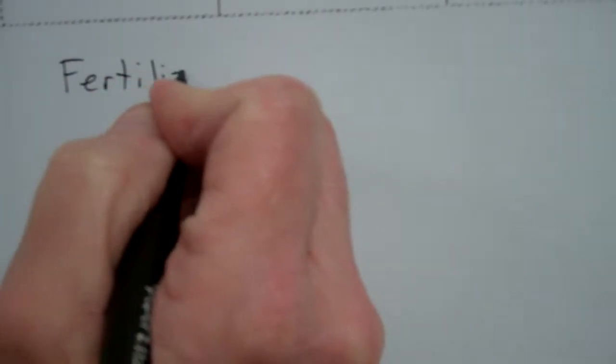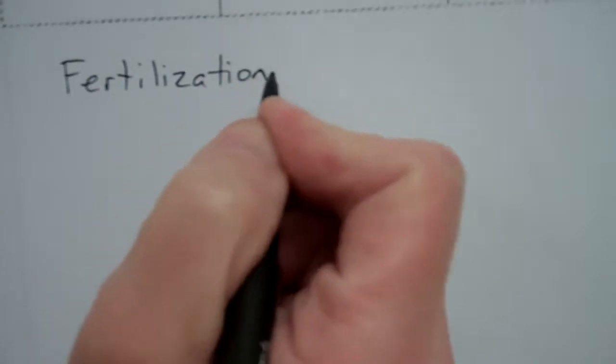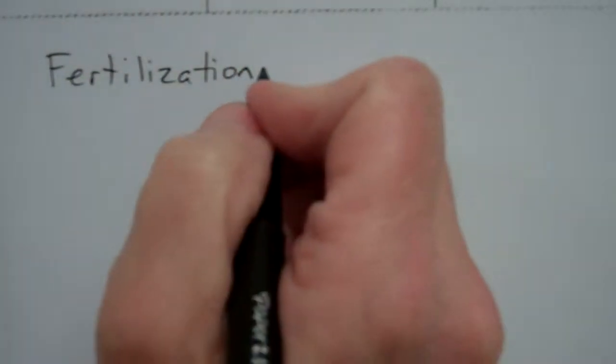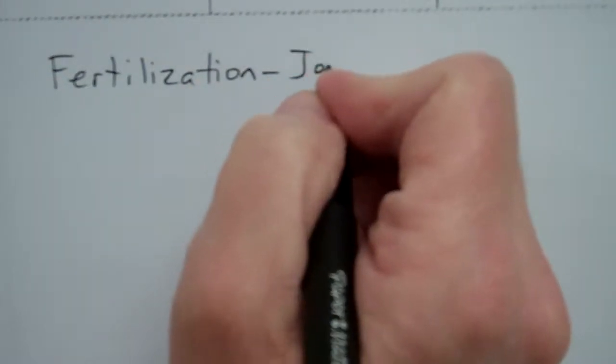I want to start with a couple of basic ideas. The first idea that I want to talk about is fertilization. So we're going to start out with a definition. Fertilization is the joining of egg and sperm.